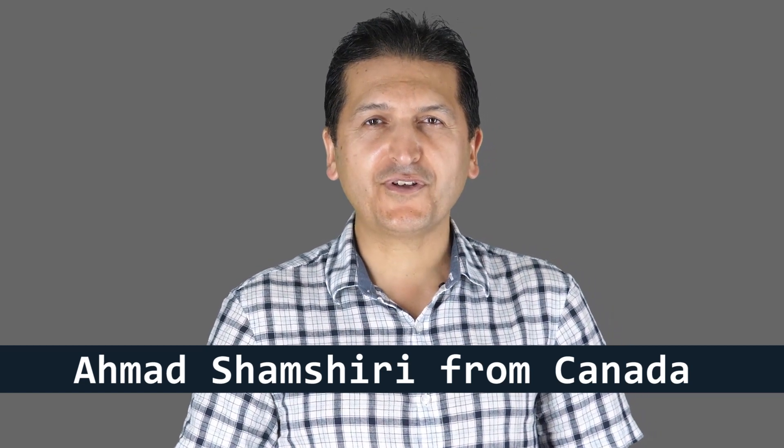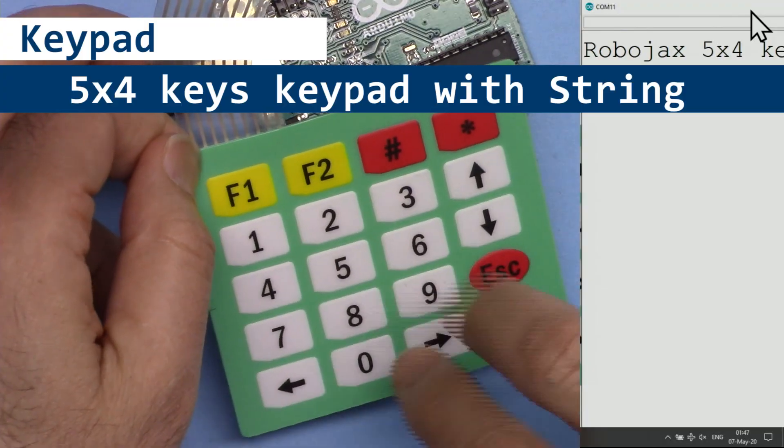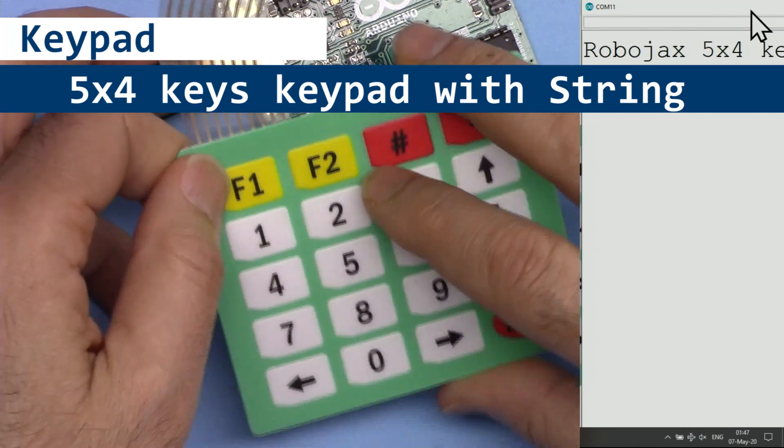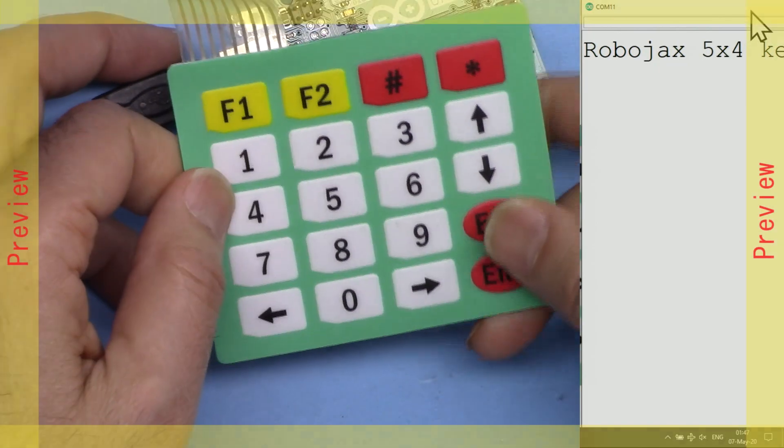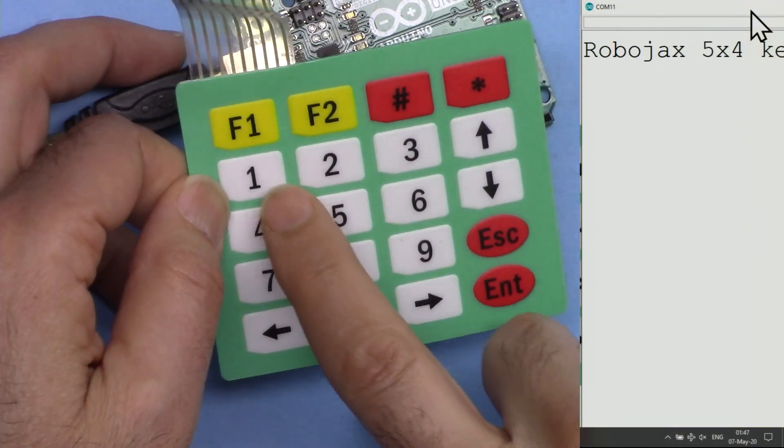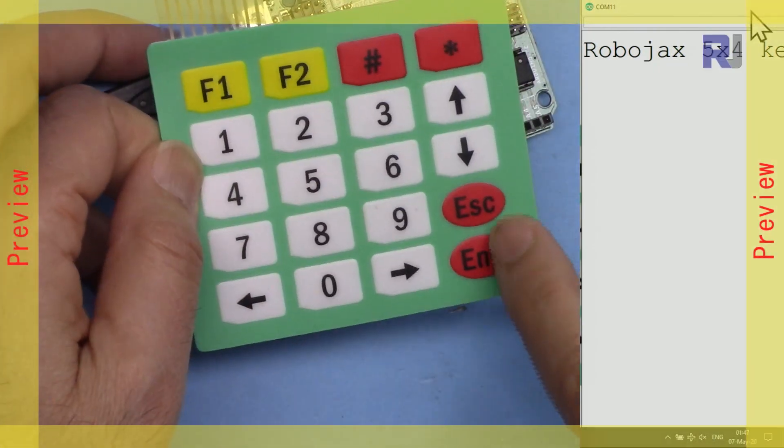Hi, welcome to an Arduino tutorial from Robojax. In this tutorial we are going to learn how we can use and detect the pressing keys of this 5 by 4 20-key keypad which has more than one character. Pay attention, we have F1 and we have escape, enter, and these up and down keys.